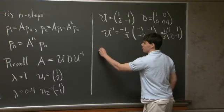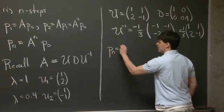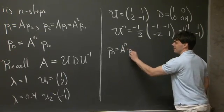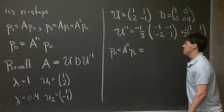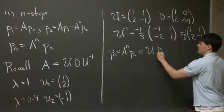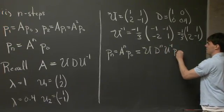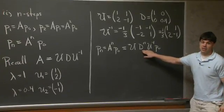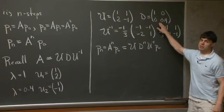OK, so now if we take A and raise it to the power of n, we have this nice identity that all the U and U inverses collapse in the middle. And we're left with U, D to the n, U inverse, P0. Now, raising a diagonal matrix to the power of n is a relatively simple thing to do. We just take the eigenvalues and raise them to the power of n.